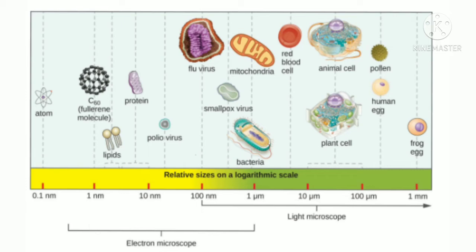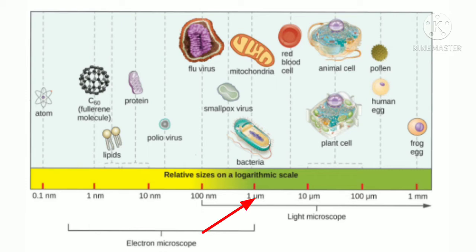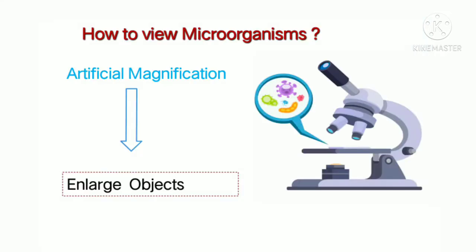Comparing sizes on a logarithmic chart: a typical virus is about 10 nanometers in size, slightly bigger than a protein — so you can imagine how small viruses are. A typical bacterium is about 1 micrometer in size, which is the same size as a mitochondrion — a cell organelle — so bacteria are much smaller than a full cell.